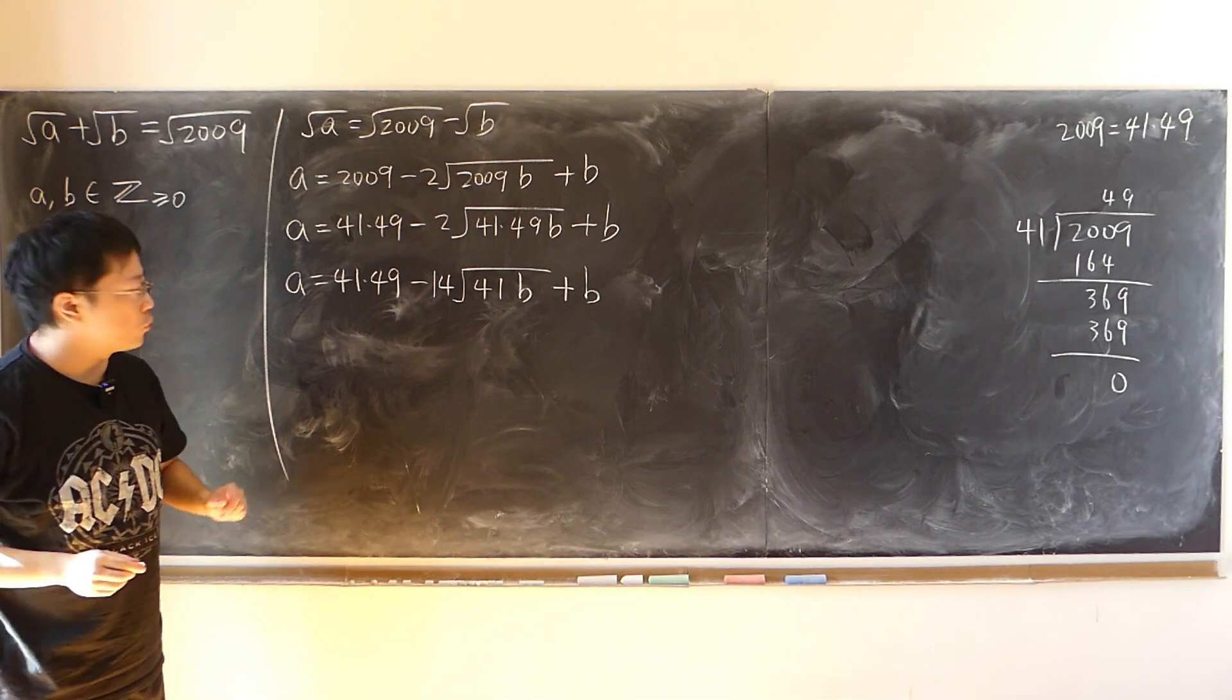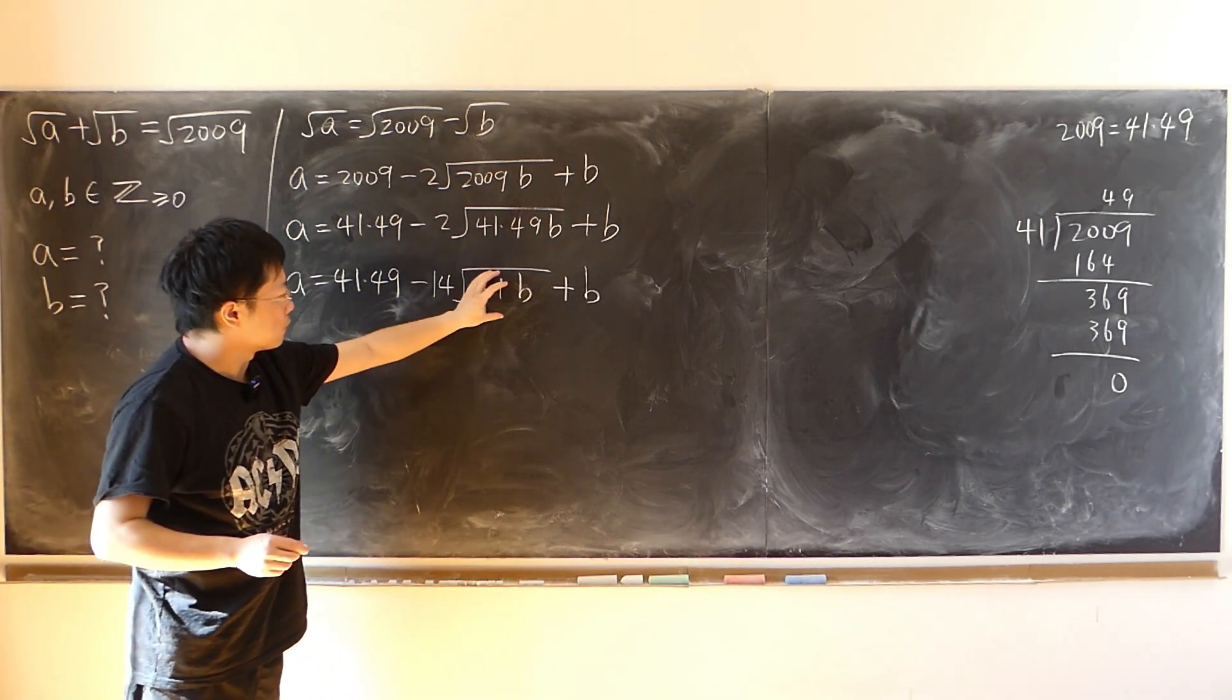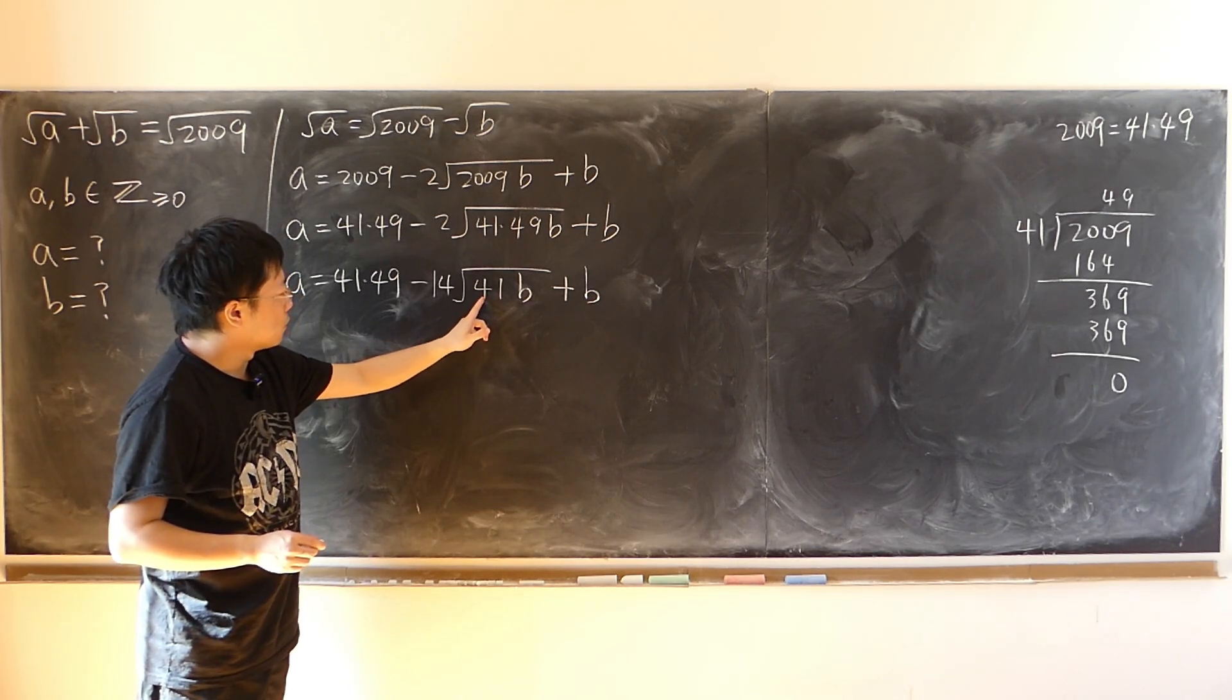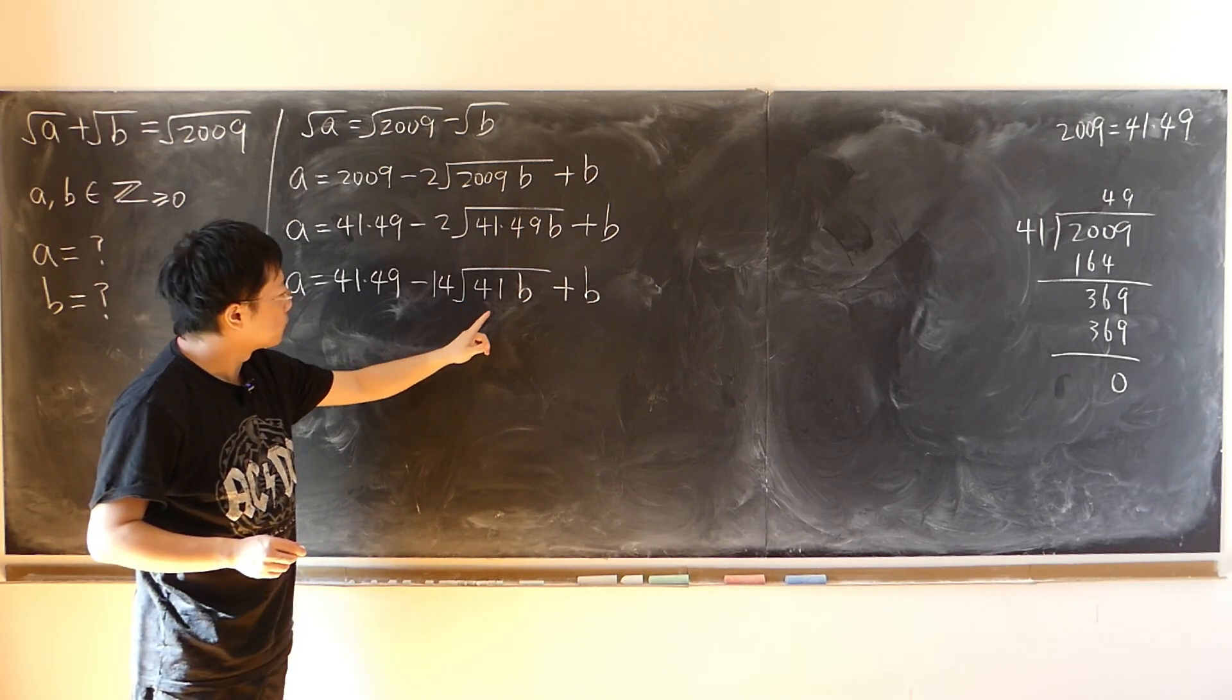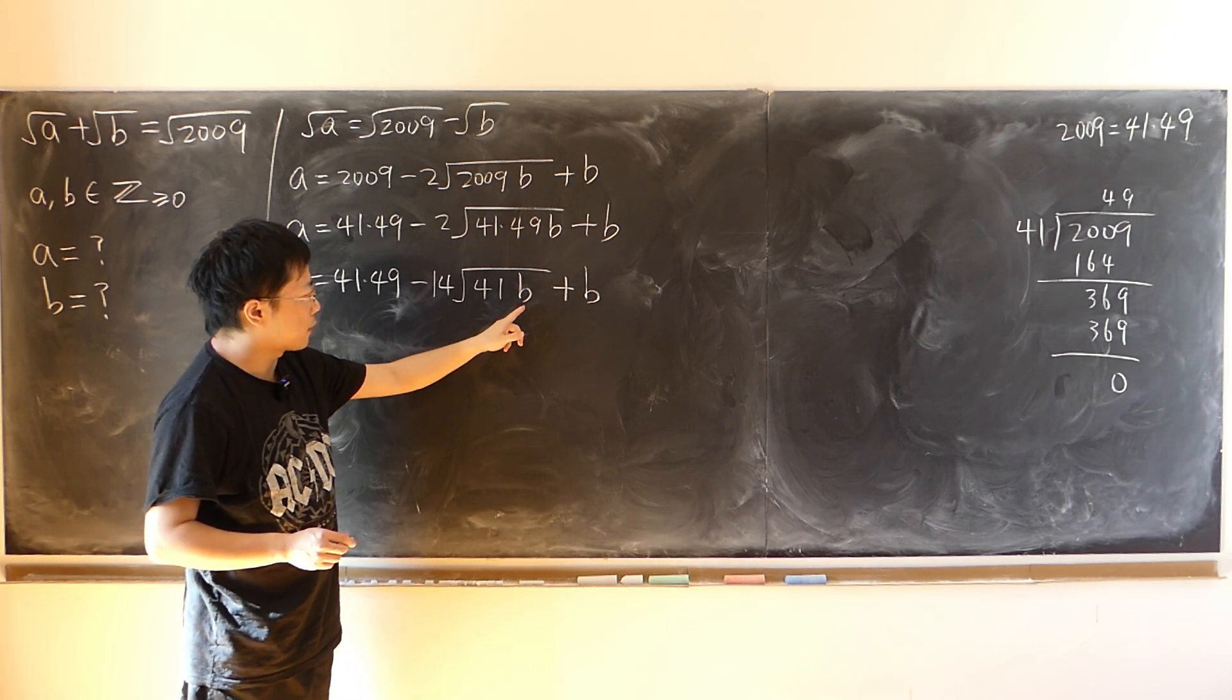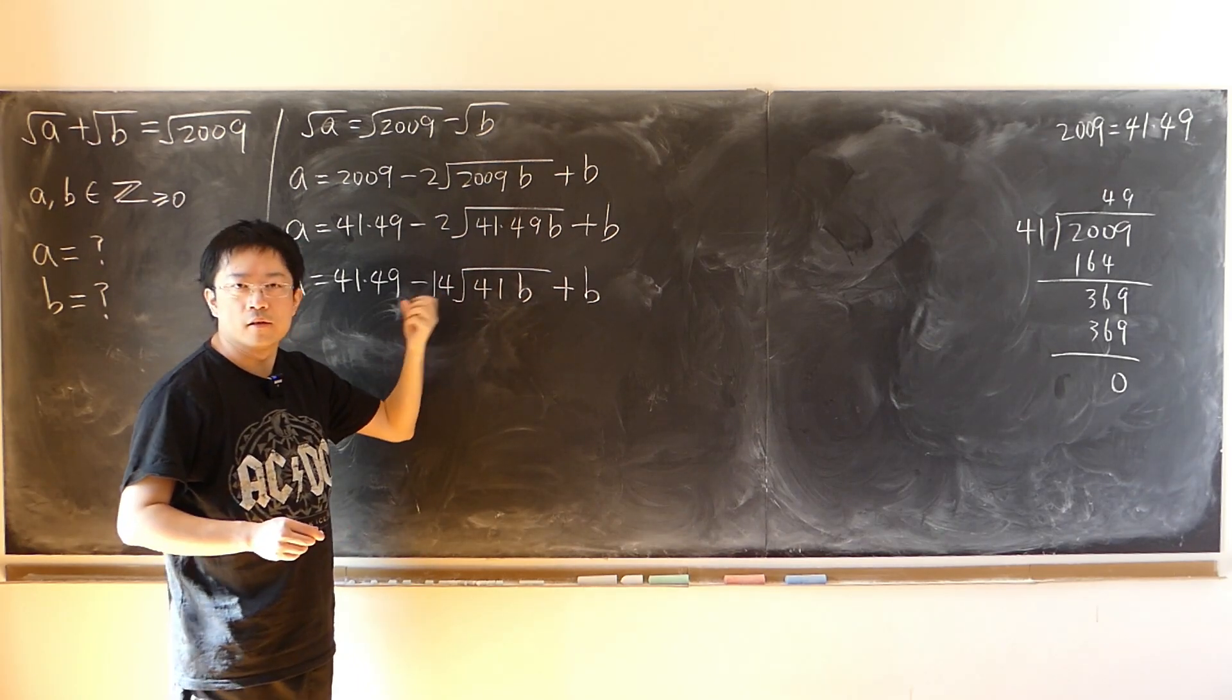And so in order to make sure a is a non-negative integer, we have to make sure that this number is a non-negative integer. And so since 41 is not a square number, which means to make up a square number, I have to make sure b contains at least a factor of 41. So that 41 times 41, that's a square number.